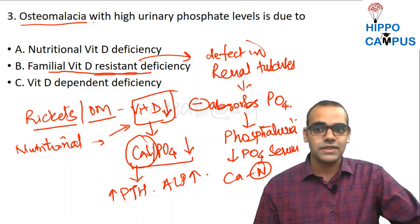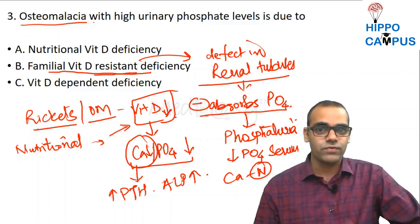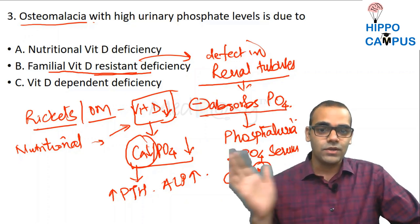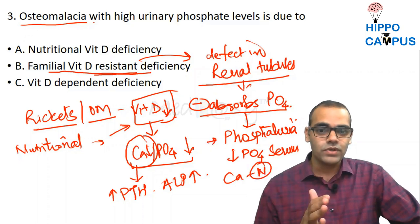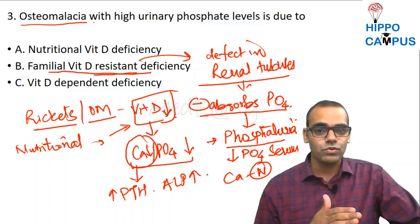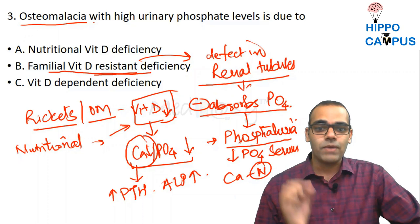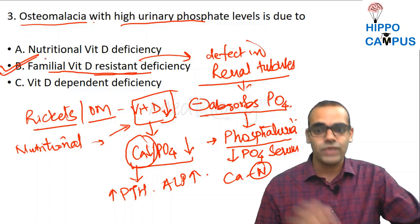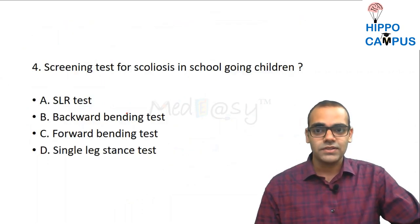The major basic defect in the resistant variety of rickets is the defect in the renal tubule — they do not absorb phosphate, so much more goes into the urine. It is called phosphaturic rickets or familial hypophosphatemic rickets. High urinary phosphate is seen in the resistant variety. So the answer is familial vitamin D resistant rickets.